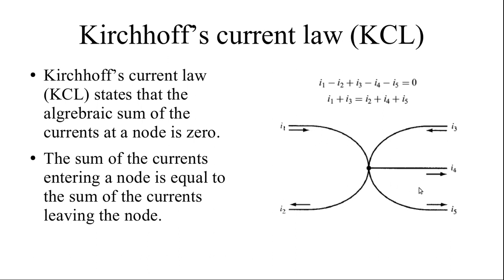Looking at the diagram: I1 is entering the node, I2 is going outside, I3 is incoming, I4 is outgoing, and I5 is outgoing. So the sum of incoming currents: I1 plus I3 equals I2 plus I4 plus I5. Alternatively, you can assign plus signs to currents coming in and negative signs to currents going out: I1 minus I2 plus I3 minus I4 minus I5 equals zero. This is Kirchhoff's Current Law.